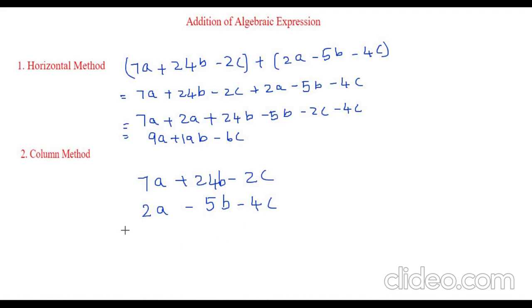Now we have to add these two expressions. Let's add the expression: 7 plus 2 which is 9a, 24 minus 5 which is plus 19b, and minus 2 and minus 4 will become minus 6c. So either you can do the horizontal method or the column method whichever is easy for you.